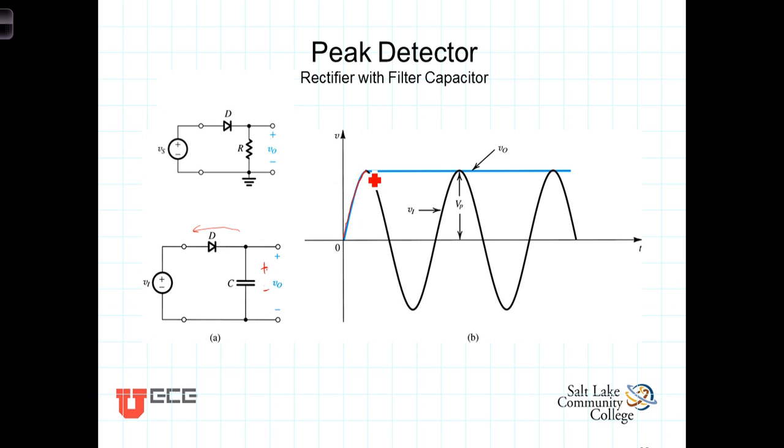So the voltage across the capacitor during that first part of the cycle goes up to the highest amount and then holds. Thus, this circuit is referred to sometimes as a peak detector circuit.